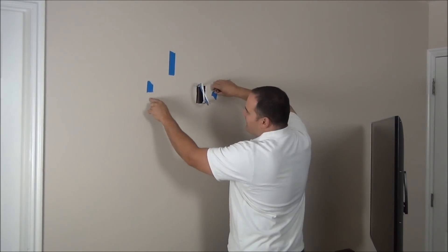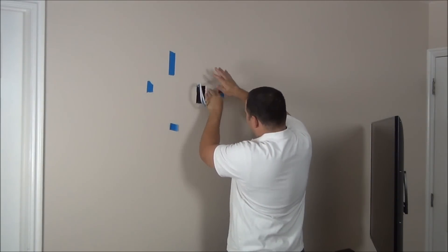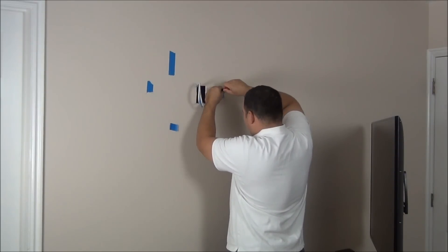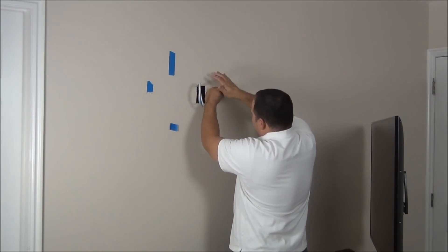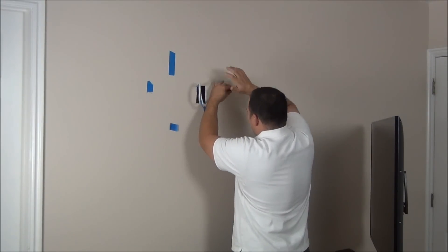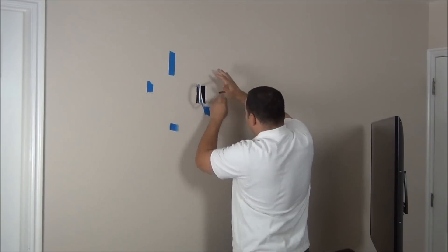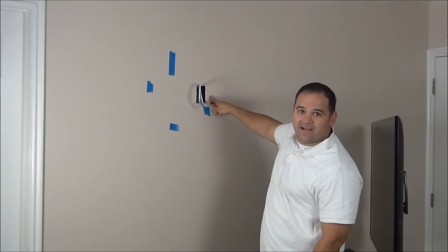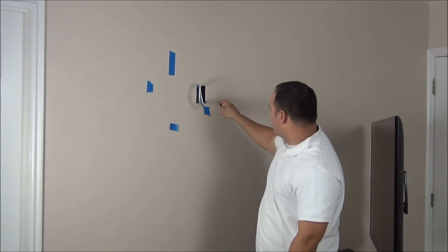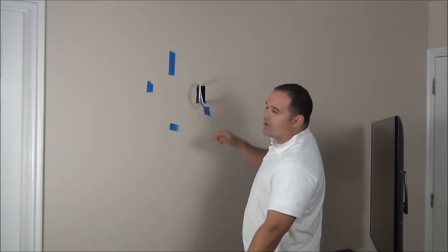I went ahead and marked my center line. Here, same thing. There is a stud there. That is the left side. So the right side should be right about there. Almost, so close. Got it. Left side, right side, make a line right in the middle. I know I'm going to hit that stud, I know I'm going to hit that stud.